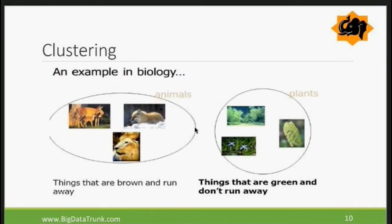Clustering is a technique where you group data into different categories based on attributes. For example, from biology: things that are brown and run away from us are animals; things that are green and don't run away are plants. You might think classification and clustering are very similar — actually, they are not. They are very different techniques. Clustering is more about bucketing into distinct groups.